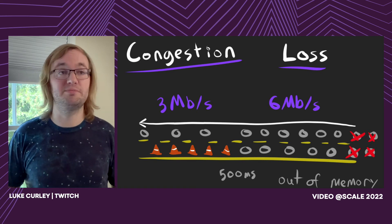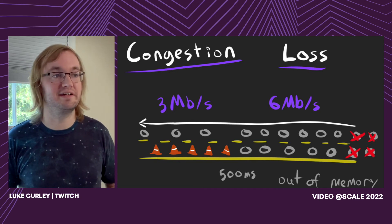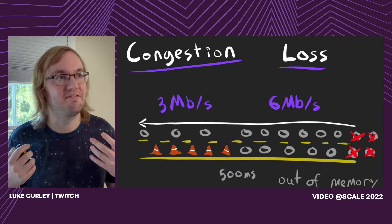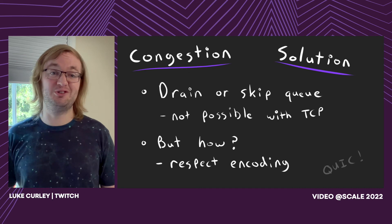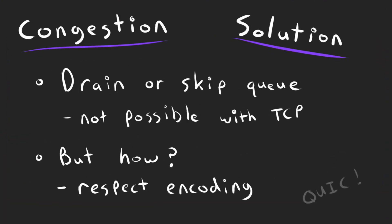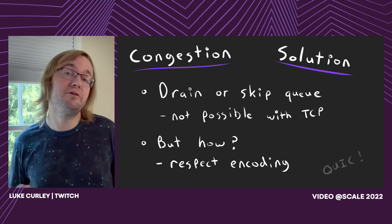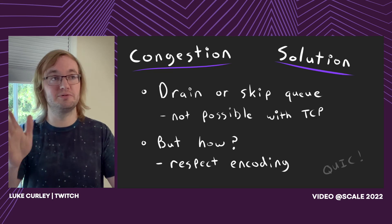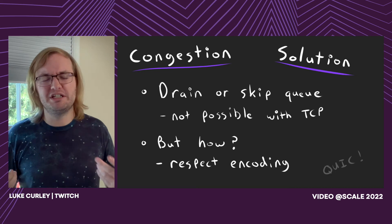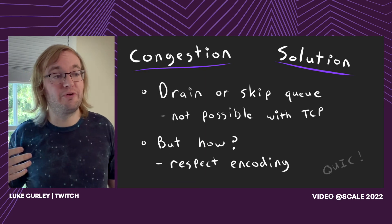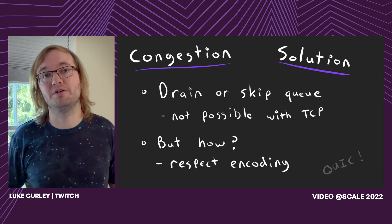The fundamental problem is when we have too much media to deliver - more than the network can sustain - we have to queue it. We need to drain or somehow skip this queue, and this isn't possible with TCP. Once you put something on a TCP socket, it's going to get sent. You can close the TCP connection, but then you have to make a new one and it's a mess. This is why people use UDP - you get far more control over what packets are sent. You can also use QUIC, with independent streams to pick and choose which ones get sent. But the challenge is figuring out which frames or packets get dropped or skipped without causing a hugely negative user experience.